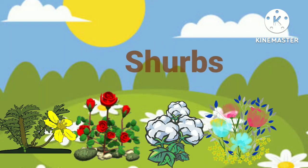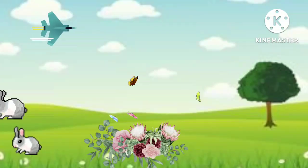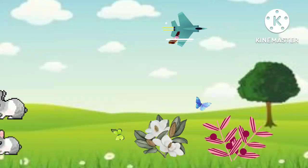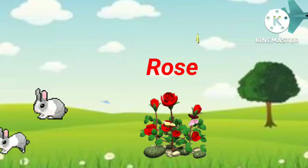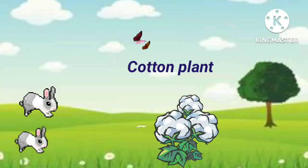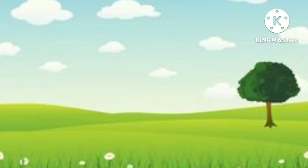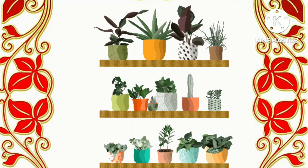Shrubs. Shrubs are small plants with branches that have small and hard stems. Rose and cotton plants are some examples of shrubs. They are also known as bushes.